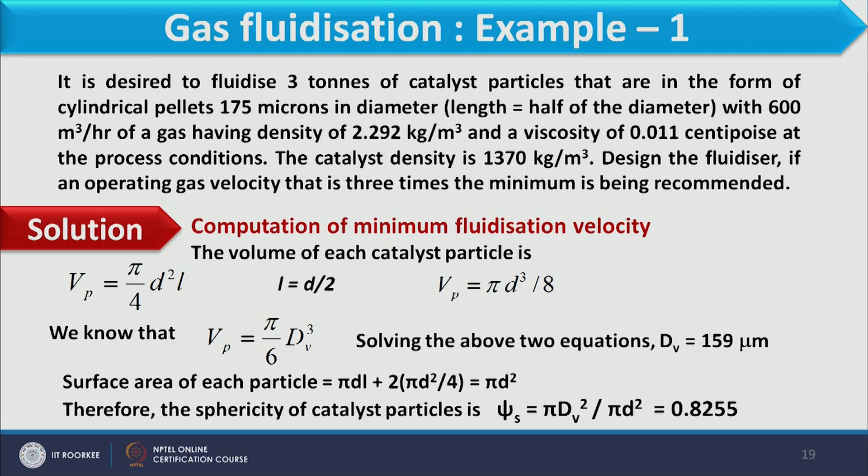To design the fluidizer column we need to calculate both diameter and height. The diameter is determined by the gas velocity and total volumetric flow. Since the operating velocity is 3 times the minimum fluidizing velocity, we first calculate U_MF. Because the particle is not spherical, we must account for particle shape.